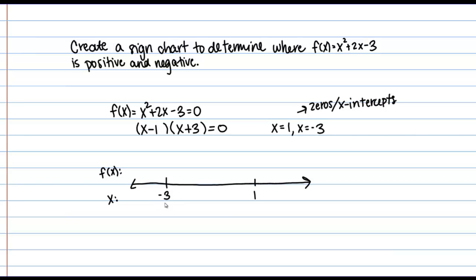These are the possible places where my function might change signs. So in this particular example, I've got two x-intercepts. So I've essentially divided my number line into three intervals here. And what I'm going to do is I'm going to just check the sign of the function on each of those intervals. So let me show you what I mean.